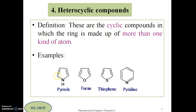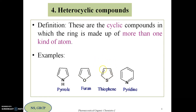For example, a five-membered ring with four carbons and one nitrogen as heteroatom is called pyrrole. A five-membered ring with oxygen as heteroatom is known as furan. A five-membered ring with four carbons and one sulfur as heteroatom is called thiophene. These are all examples of five-membered heterocyclic compounds.